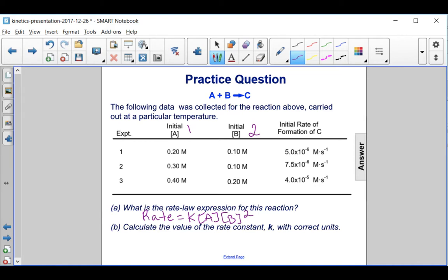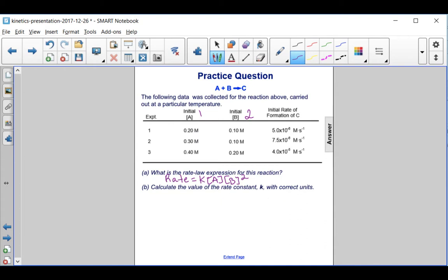Then calculate the value of the rate constant K with correct units. K is equal to the rate divided by concentration of A times concentration of B squared. We can pick whatever experiment we want. I just went with experiment 1.